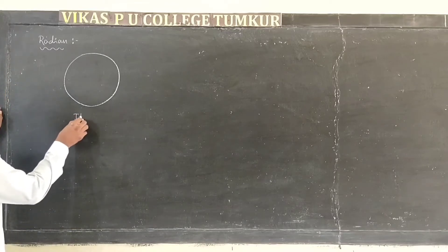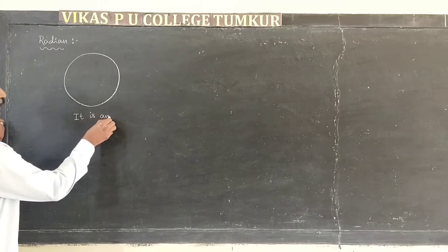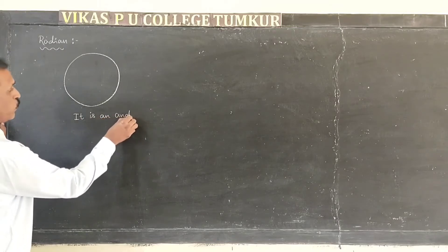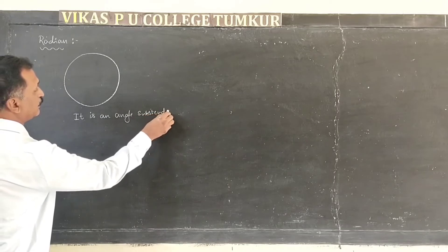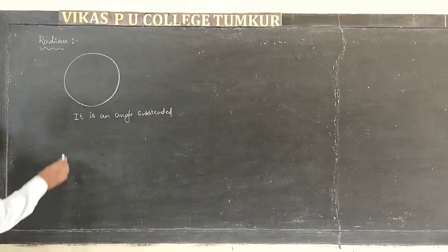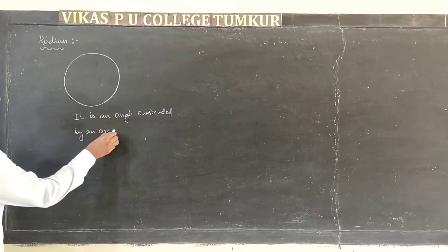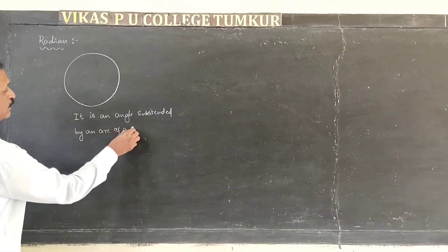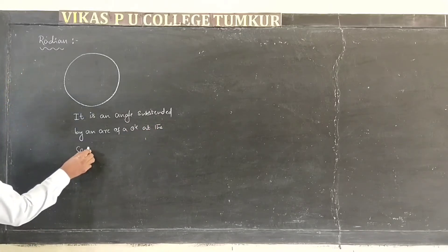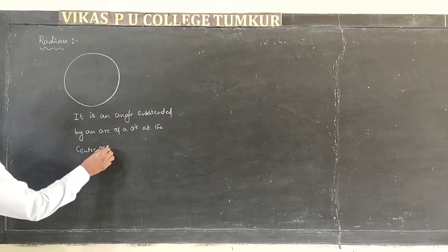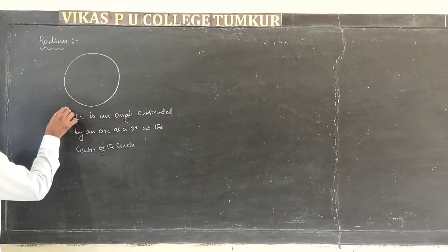Here is the definition: a radian is an angle subtended by an arc of a circle at the center of the circle. Remember, this is the definition of radian.